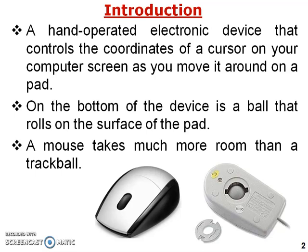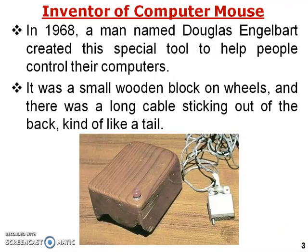As you move it around on a pad, on the bottom of the mouse there is a ball that rolls on the surface of the pad. You can see the picture. A mouse takes much more room than a trackball — basically a trackball takes less room, while a mouse takes a larger space.